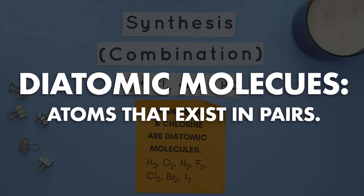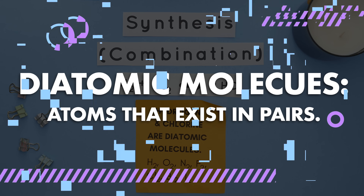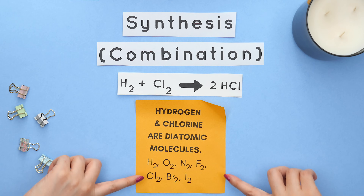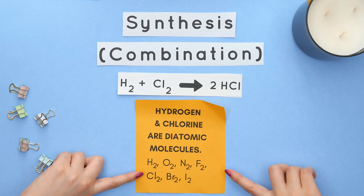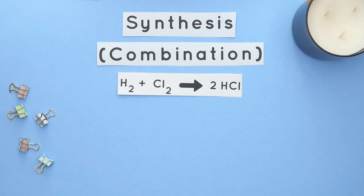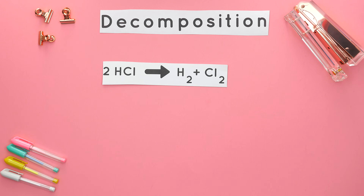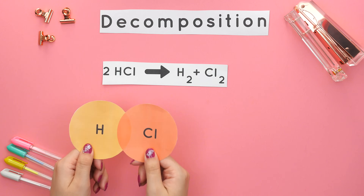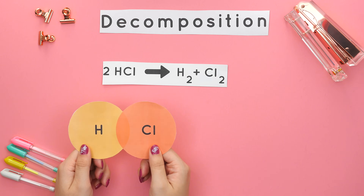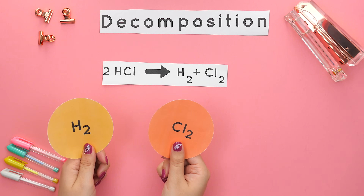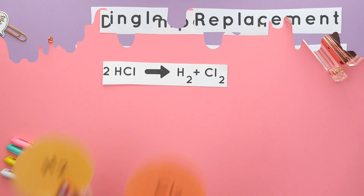Diatomic molecules are atoms that exist in pairs. Here is a list of diatomic molecules. Now if we flip this synthesis reaction, you'll see it's now a decomposition reaction, because in a decomposition reaction you have one reactant that is being broken apart into multiple products.